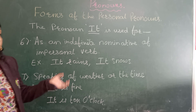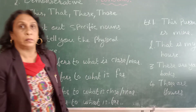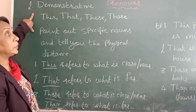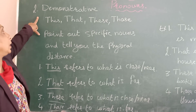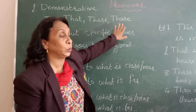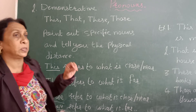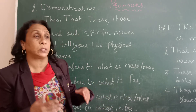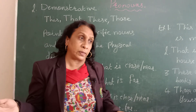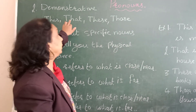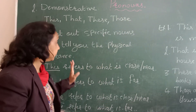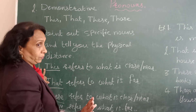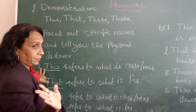Now let us come to the second type — demonstrative pronouns. The demonstrative pronouns are: 'this', 'that', 'these', and 'those'. They point out to some specific noun and tell you about the physical distance — whether something is near us or far away from us. 'This', 'that', 'these', and 'those' are demonstrative pronouns.